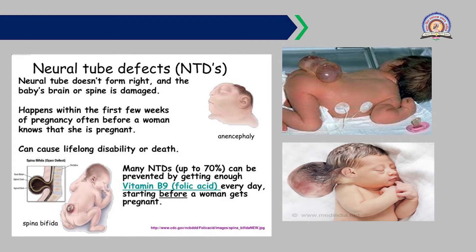The baby can suffer lifelong disability or death from NTDs. In the figure, spina bifida is shown — an outward protrusion of the spine, also called open spine. Up to 70% of NTDs can be prevented by getting enough vitamin B9, that is folic acid, every day, starting before a woman gets pregnant. Folic acid supplementation is very important for pregnant mothers for the normal development of the spine and brain of the baby.